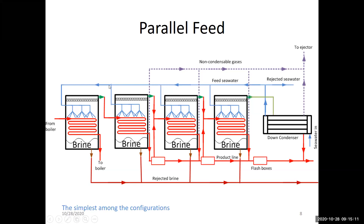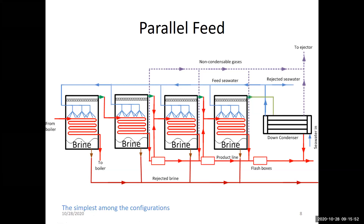In parallel feed, the seawater is sprayed in parallel to each effect, meaning the temperature is the same at every effect inlet. So in every effect there is a little sensible heating before evaporation occurs — this was not the case in forward feed, where seawater was preheated in the first effect and already at saturation temperature entering subsequent effects. Here, in every effect, the water heats from T_feed to the saturation temperature of that effect before evaporation.